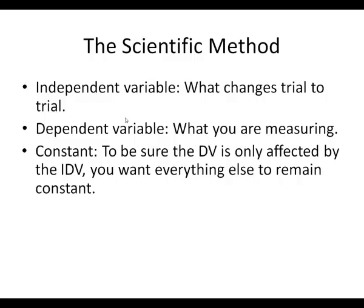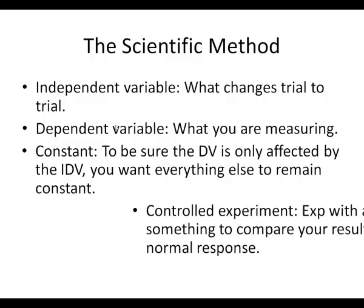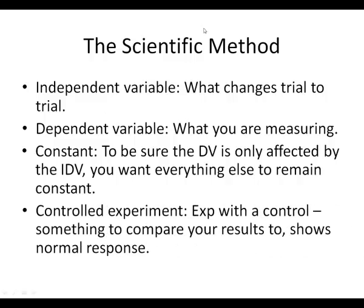To ensure this, we want everything else to remain constant. In any experiment you want as many things to be constant as possible, so that you know whenever you're collecting your data that the data is only changing because of the independent variable. A controlled experiment is an experiment that has a control.